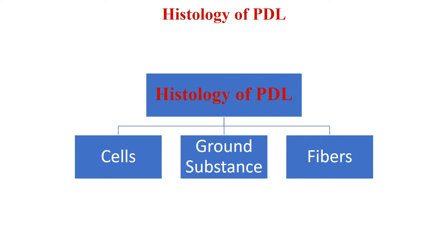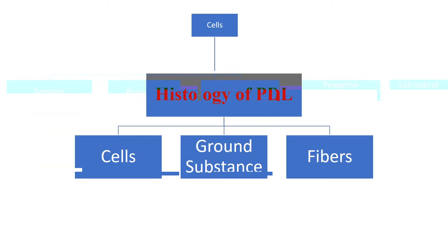Now let us see the histology of PDL. This can be studied under three headings. One is the cells, next is ground substance, and another one is the fibers. Cells, fibers, and ground substance — these three together constitute the histology of PDL.